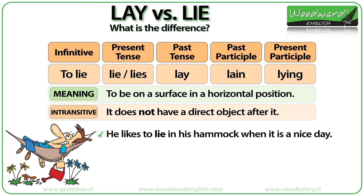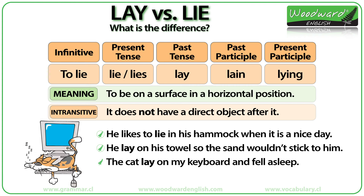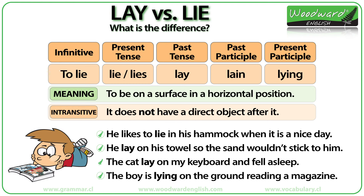He likes to lie in his hammock when it is a nice day. He lay on his towel so the sand wouldn't stick to him. The cat lay on my keyboard and fell asleep. The boy is lying on the ground reading a magazine. In these previous sentences we could also include the word DOWN after the verb LIE — he lay down on his towel, the cat lay down on my keyboard.